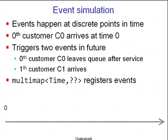In many cases you cannot solve the system in closed form because it's too complicated — for example, going to a bank in a gang of three friends who join different queues and whoever gets to the head first lets the others run there. So simulations are often required. Starting with a simple model of one queue: the 0th customer C0 arrives at time zero. Time is continuous, but events happen at discrete points. This triggers two future events.